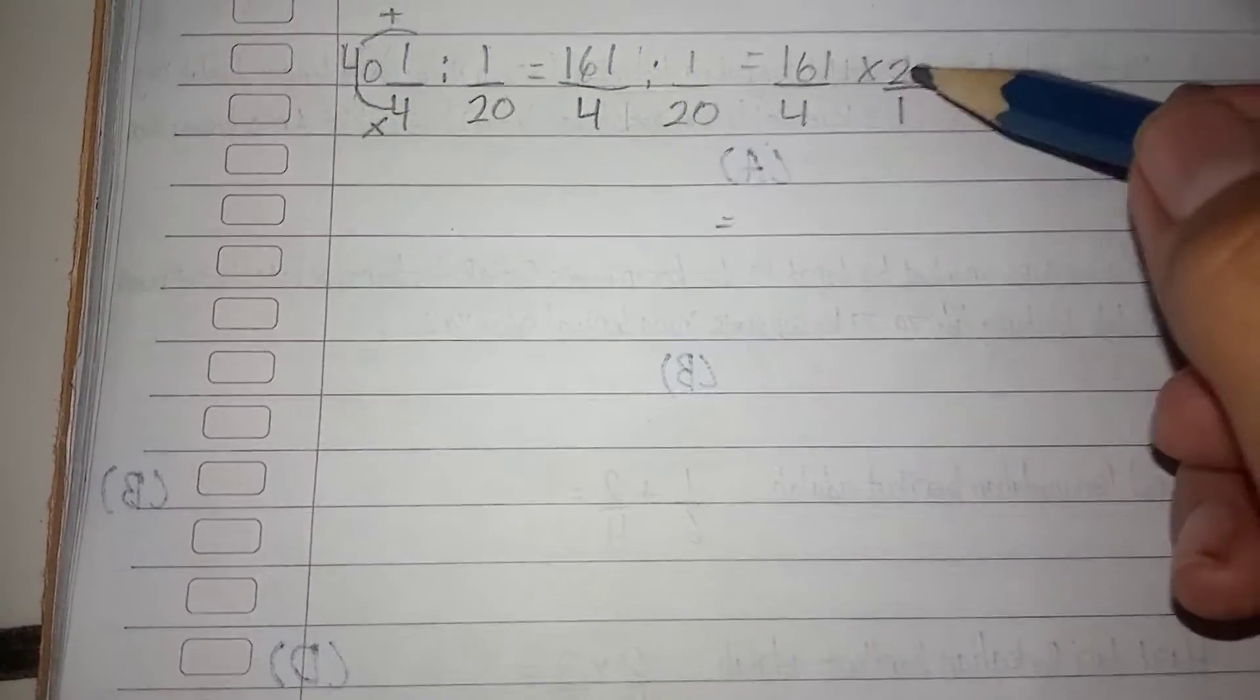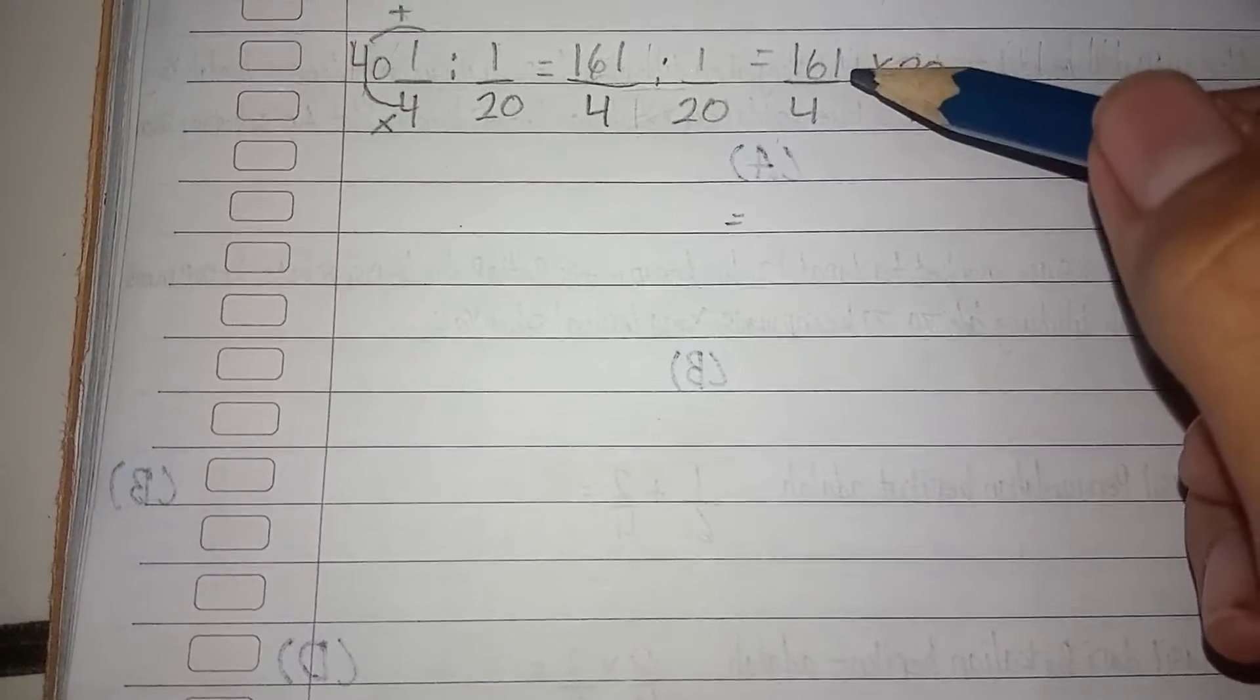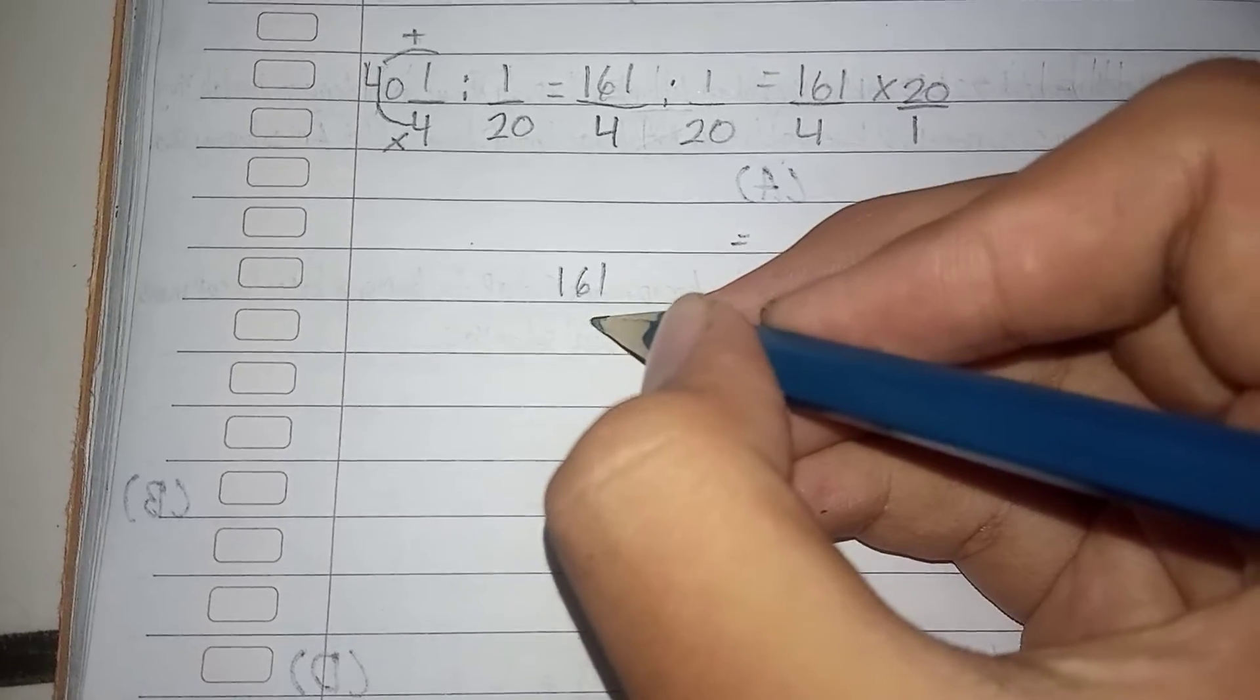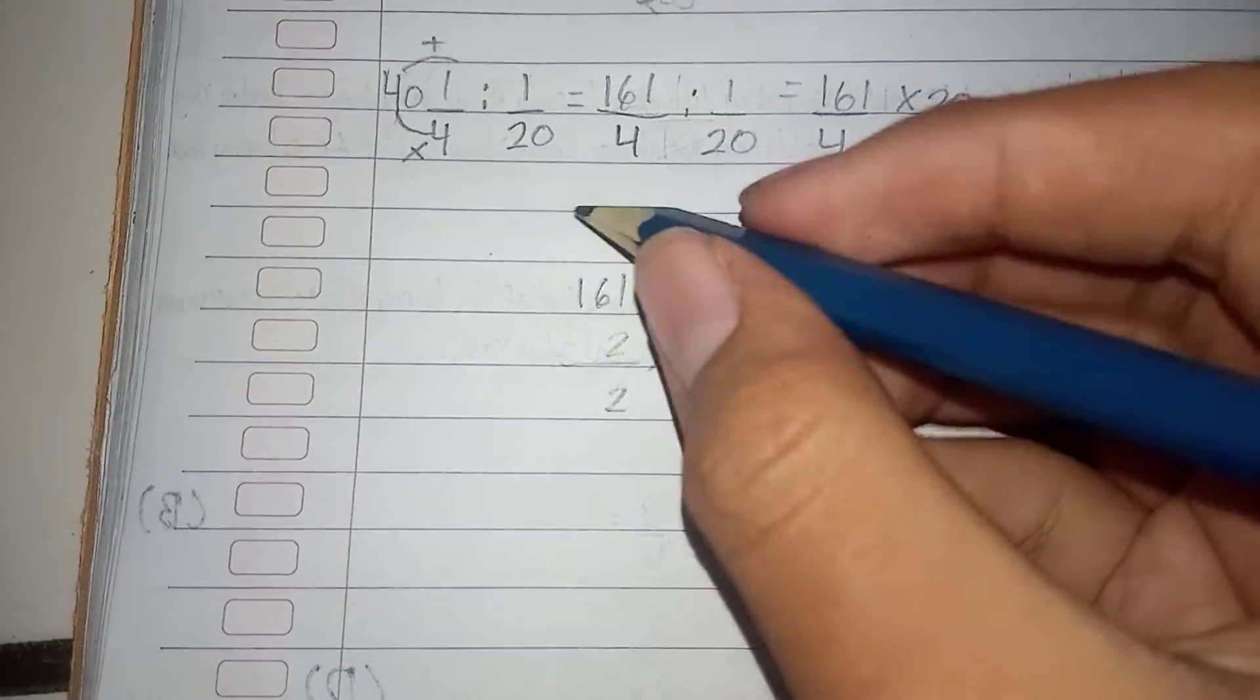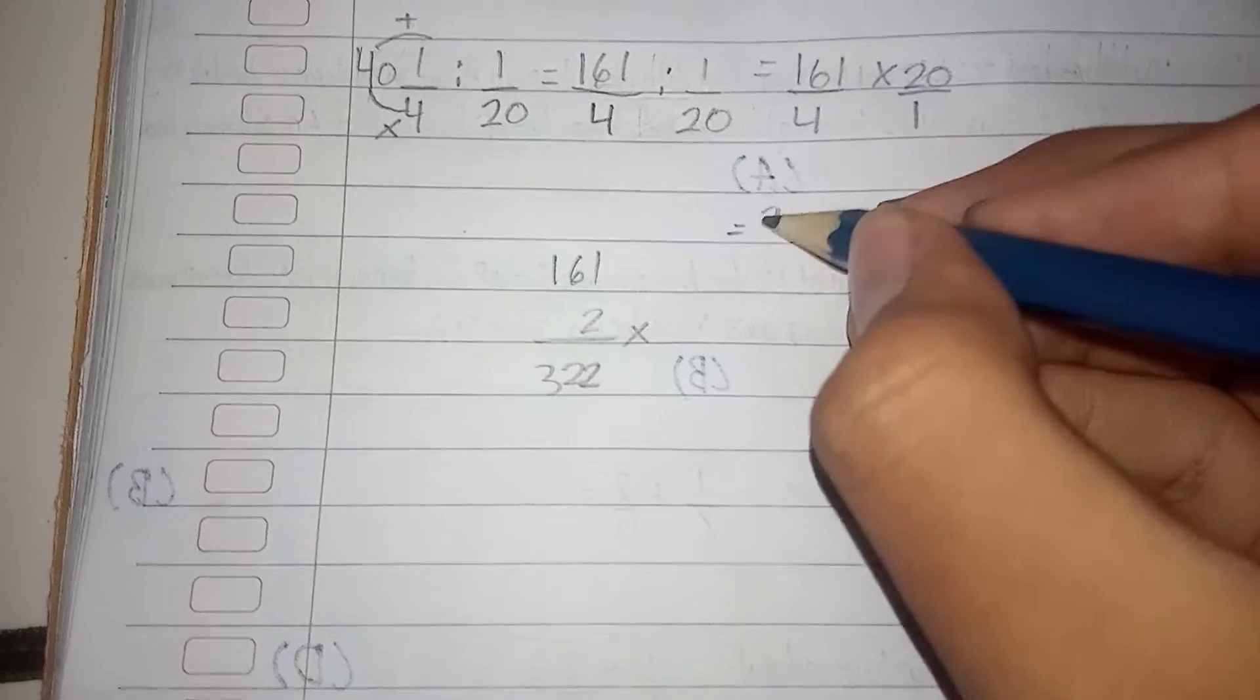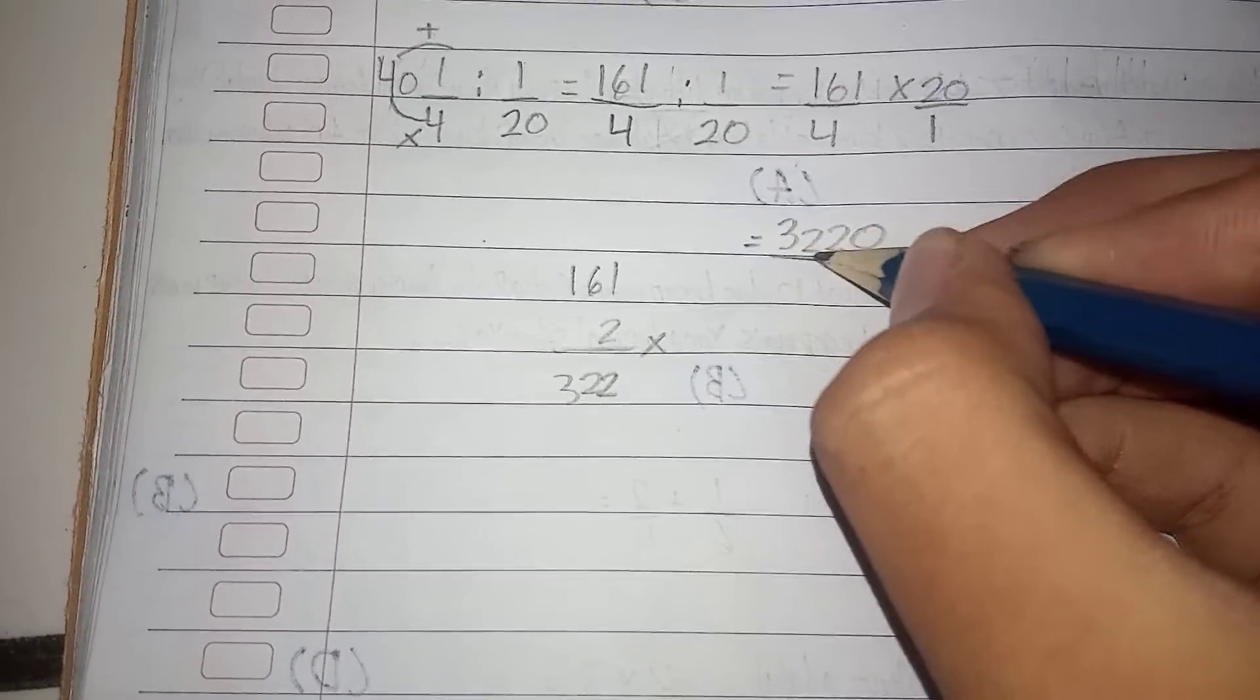161 times 2 first because I already know how to do that. Oh, so that is... this is just 32, so in that case it's 3220, then over 4.